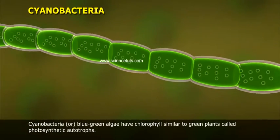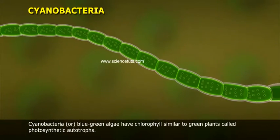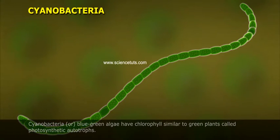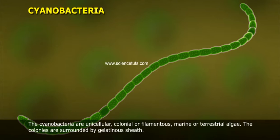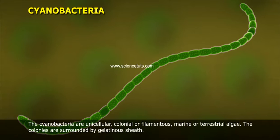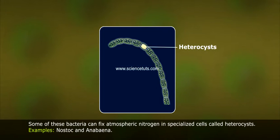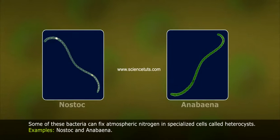Cyanobacteria, or blue-green algae, have chlorophylls similar to green plants and are called photosynthetic autotrophs. The cyanobacteria are unicellular, colonial, or filamentous marine or terrestrial algae. The colonies are surrounded by a gelatinous sheath. Some of these bacteria can fix atmospheric nitrogen in specialized cells called heterocysts. Examples include Nostoc and Anabaena.